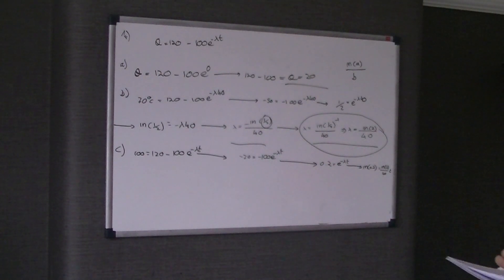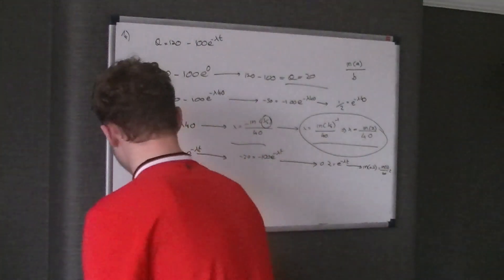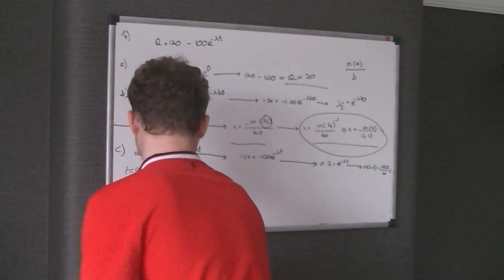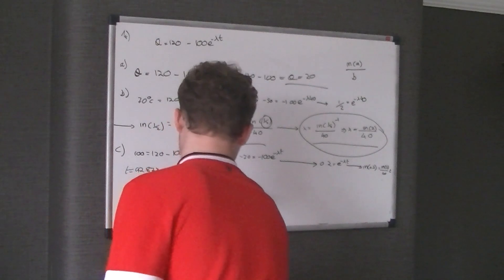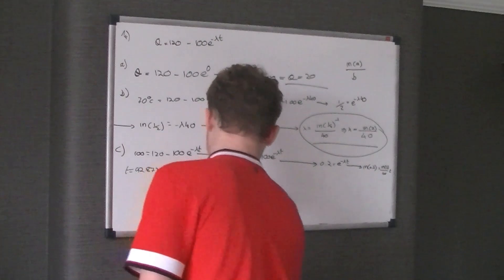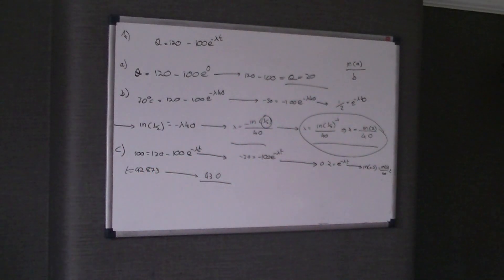What you would do then is divide both sides by ln 2 over 40. And if you did that you would get t is equal to 92.873. Or because they want it to one decimal place, it's 93.0 seconds. So that's how long the kettle is on for to get to 100 degrees.